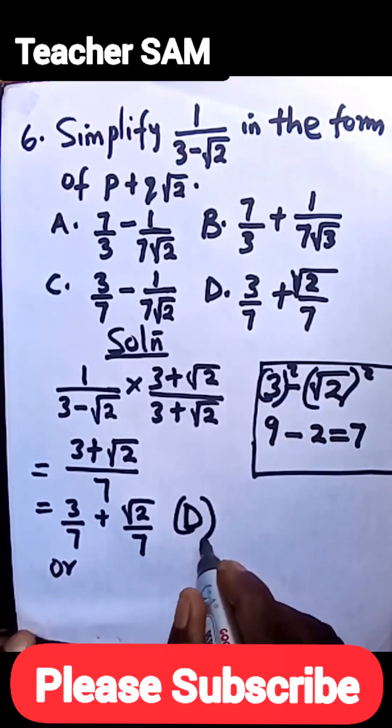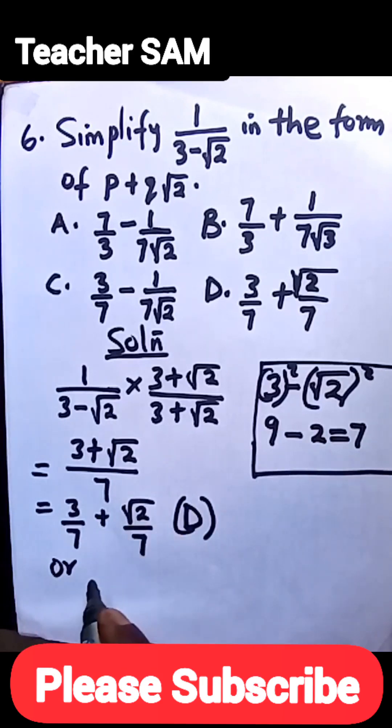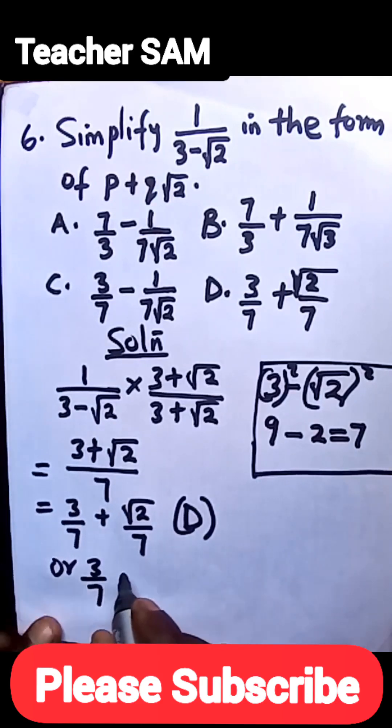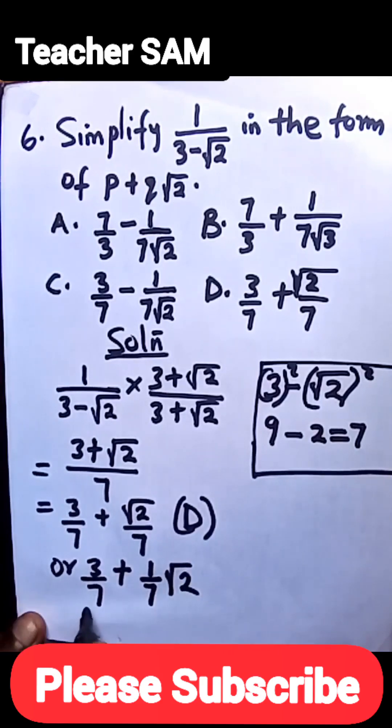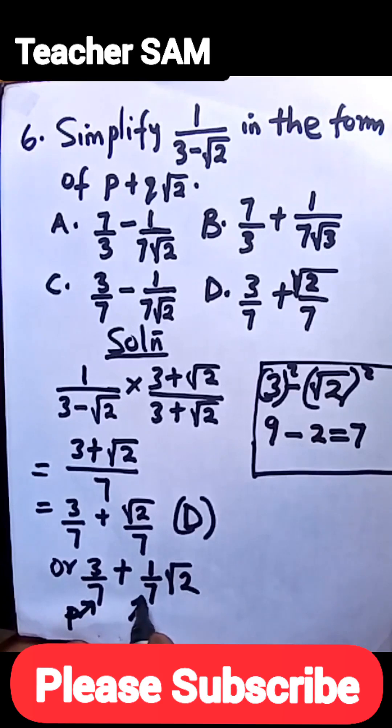Actually, if you were to rearrange it correctly to get in this form of p and q, you're supposed to have 3/7, which is the same with this, plus 1/7 times √2. So this one will become your p, and this will become your q. So your p would have been 3/7 and your q would have been 1/7. There are some other questions you may be asked to find either the sum of p and q, or just find p and find q.